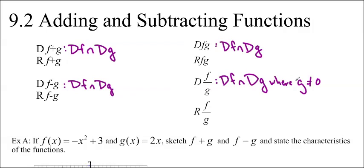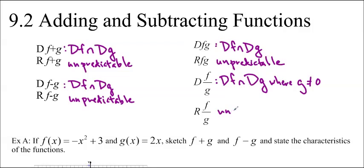We also learned that the range of all of these things is unpredictable. So basically, we'd have to look at the graph and figure it out. That's the only way to do it. You can't just add the y values together because it's just not going to work out.